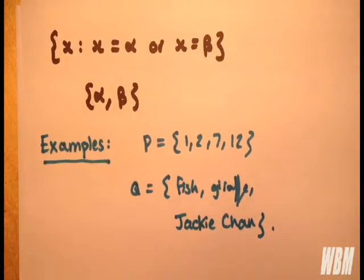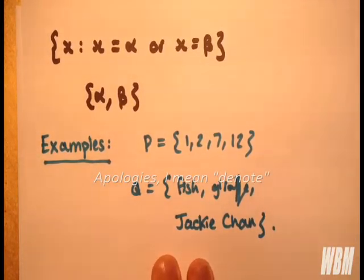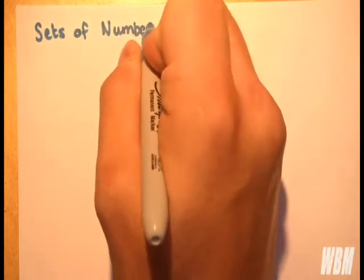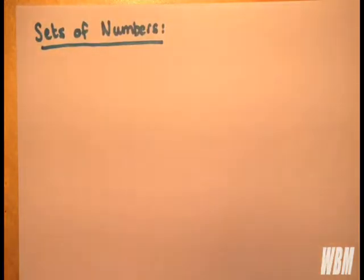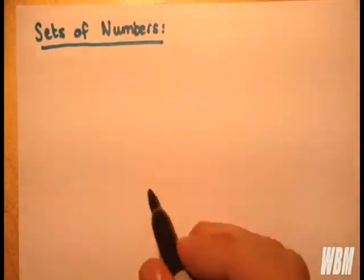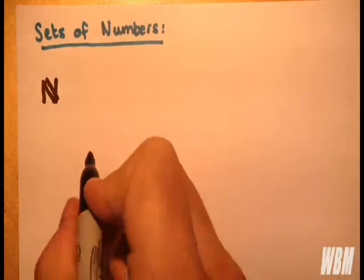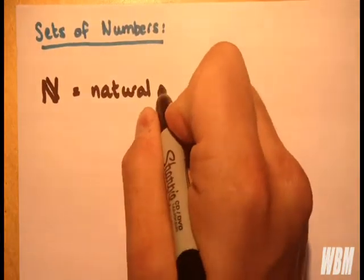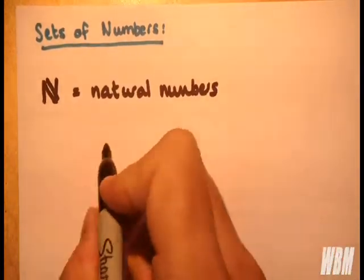And just to finish off, how do we use this in real mathematics? Well, if we want to denote a set of numbers, we have different number sets of course. We can have the natural numbers. So natural numbers, and the natural numbers are positive integers.